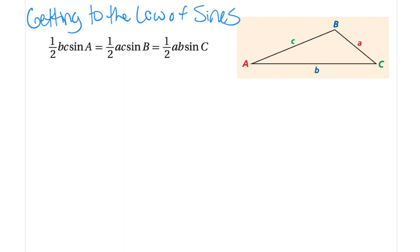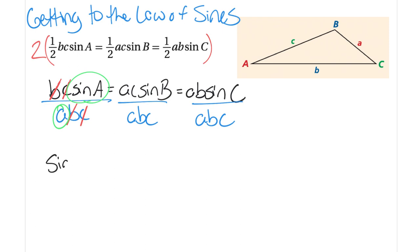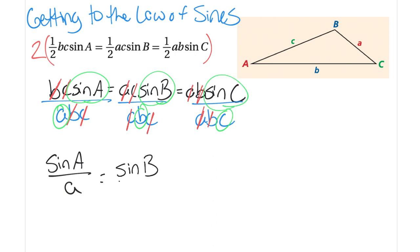Now we're going to simplify and clean this up. First, multiply everything by 2, because 2 times one half is 1 — that gets rid of all the one halves. Then to simplify the variables, divide every piece of this equality by ABC. For example, b divided by b is 1, so we can cancel it; c divided by c is 1. What we're left with is sine of angle A over its corresponding side length a. We keep simplifying, and after circling what remains, we get sine of angle B over side b equals sine of angle C over side c.